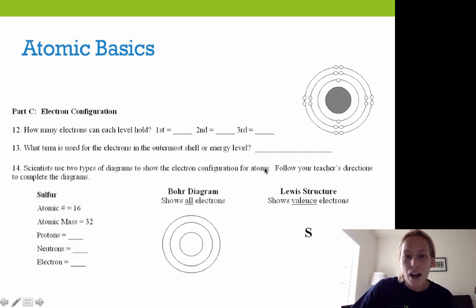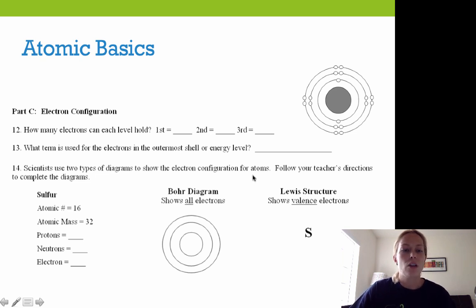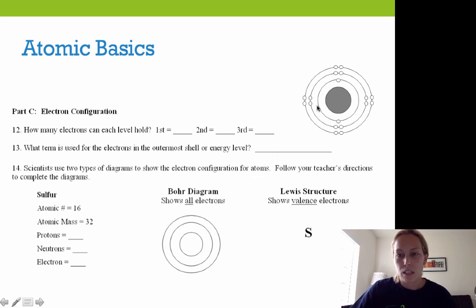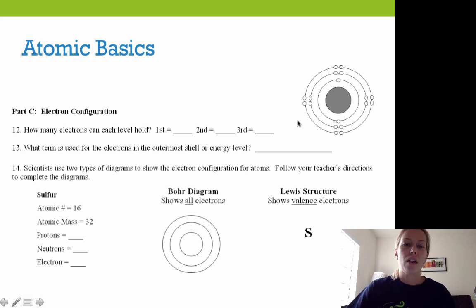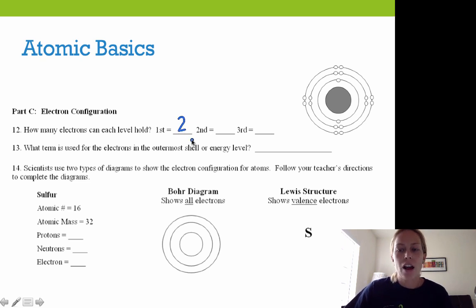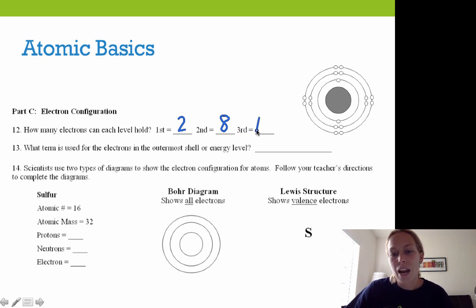Now that you've completed the box, we're going to take a look at electron configuration — where the electrons are found in the electron cloud. There are different energy levels. Looking at this representation of an atom, we see one, two, three different energy levels. As we look down the periodic table there can be more, but for the most part we're just dealing with elements that have three energy levels. Only two electrons can be held in the first energy level, the second can hold eight electrons, and the third can hold up to 18 electrons.